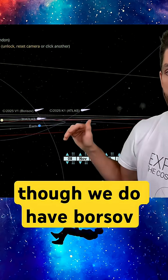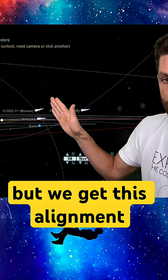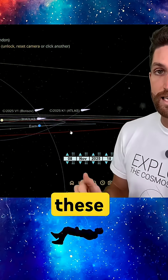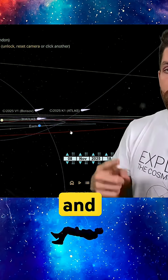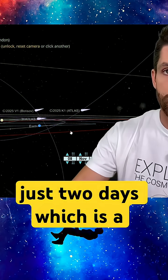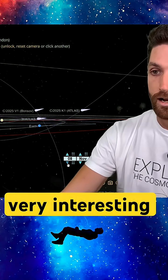Though we do have Borisov above the ecliptic plane, we get this alignment between these three objects: the Earth, Borisov, and 3i Atlas in just two days, which is a very interesting alignment.